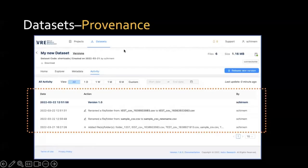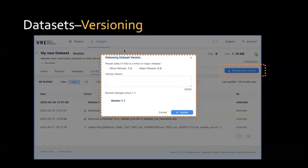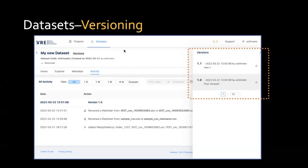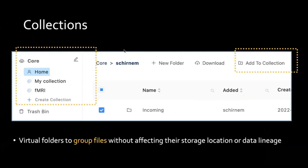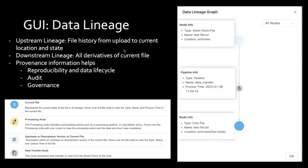Back to the VRE: this is then packaged into a nicer format to allow provenance tracking and versioning of datasets annotated with metadata and structured. A more lightweight way for structuring data is given by the VRE in the form of so-called collections — virtual folders where you can locally group files without actually affecting the storage or lineage. The lineage is the provenance track or digital history of a digital object — from the time it was uploaded and the person who uploaded it through all intermediate steps.